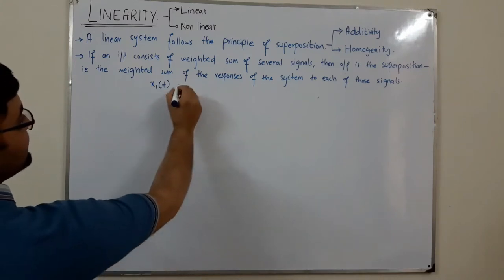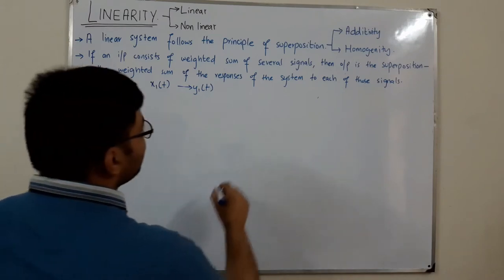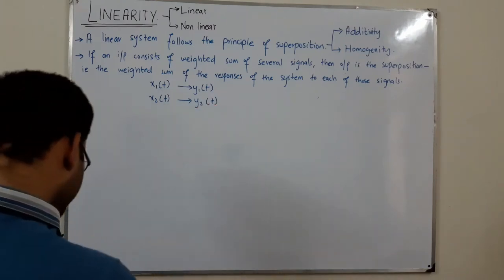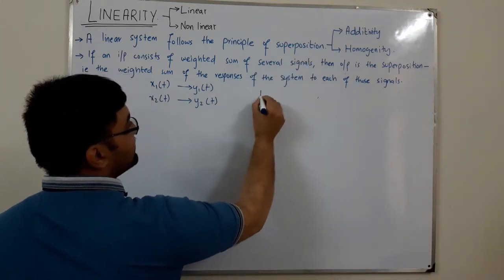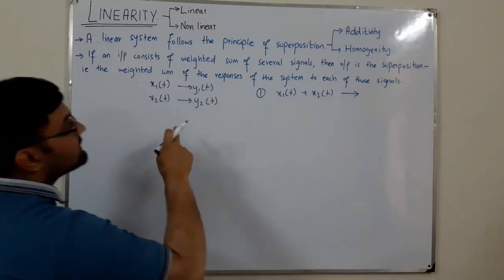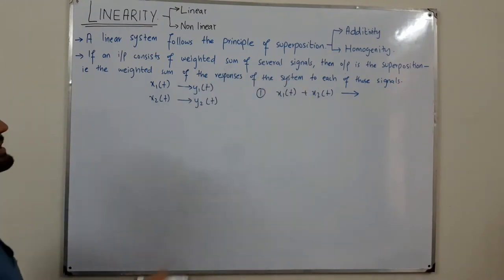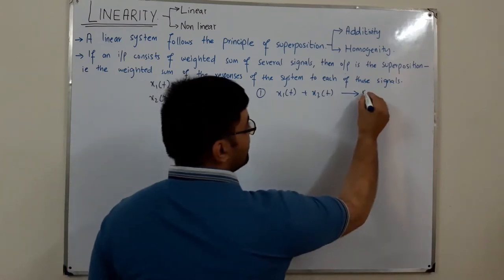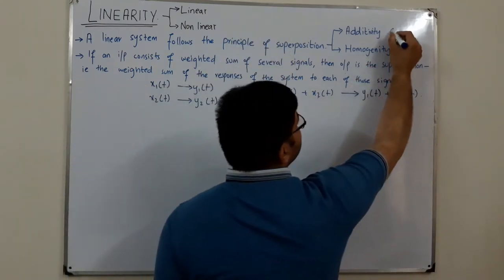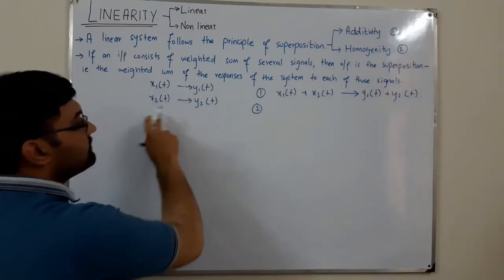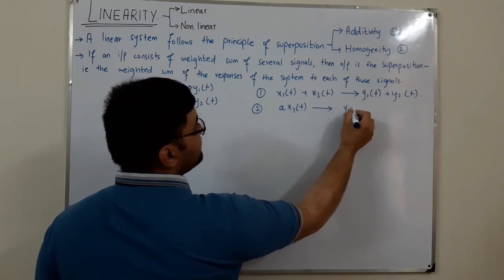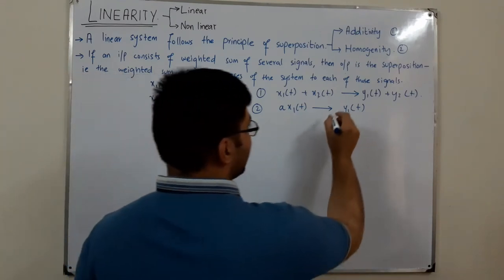You have another input x2(t), the output is y2(t). Now the principle of superposition: if you add the inputs x1(t) + x2(t), the output is the weighted sum of the individual responses, which is y1(t) + y2(t). This is the law of additivity. The second part: if you multiply the input by a coefficient — a times x1(t) — the output is a times y1(t). This is the law of homogeneity.